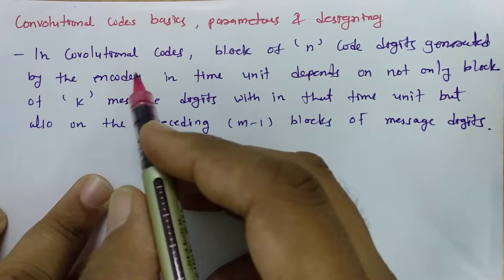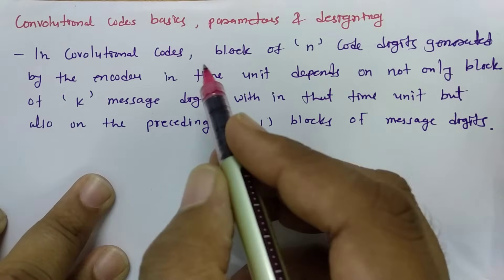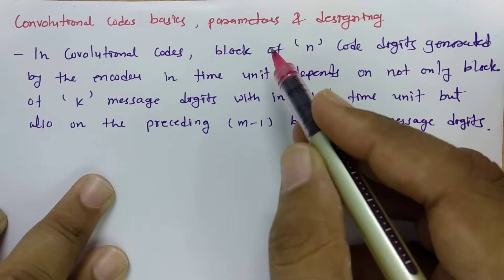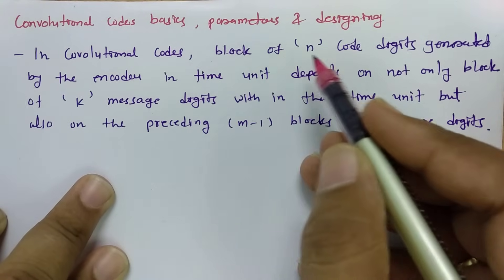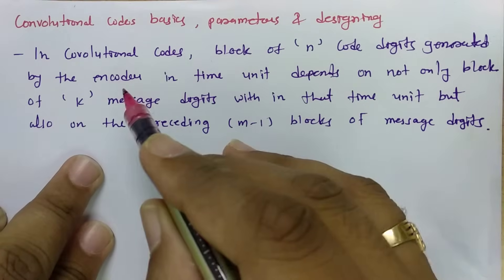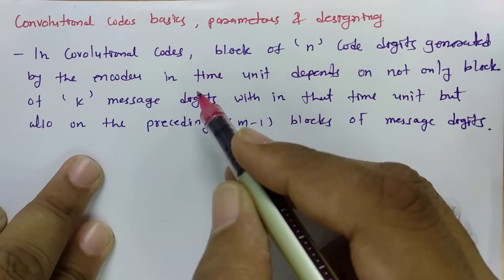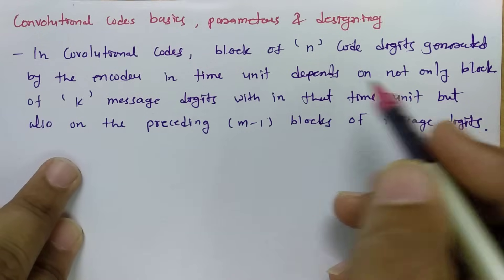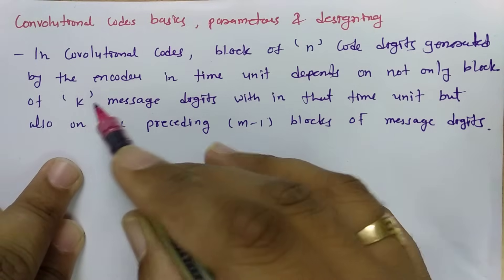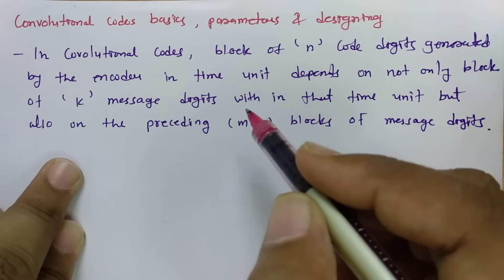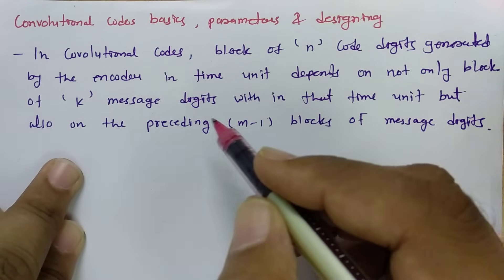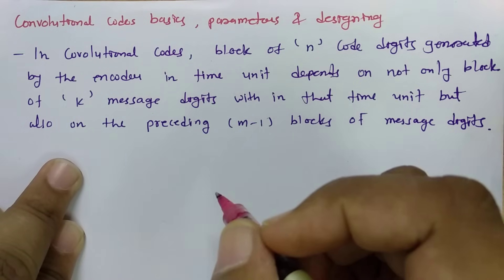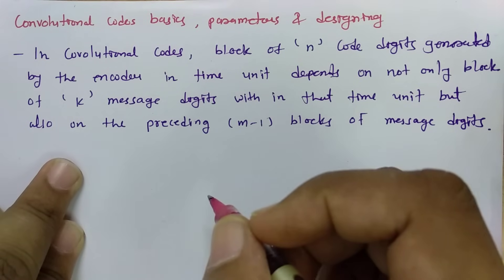When we talk about convolution codes, a block of n code digits generated by the encoder in a time unit depends not only on the current block of k message bits, but also on the preceding blocks of message digits.